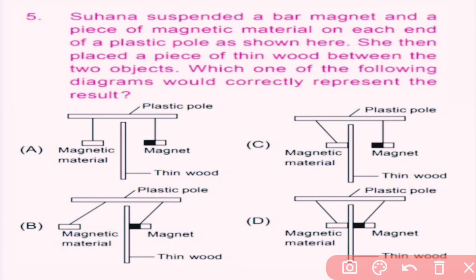Question number 5. Suhana suspended a bar magnet and a piece of magnetic material on each of the plastic poles as shown here. She then placed a piece of thin wood between the two objects. Which of the following diagrams would correctly represent the result? Wood allows magnetism to pass through it because it is a non-magnetic material, hence the magnet will be able to attract the magnetic material. So here, D is the correct answer.